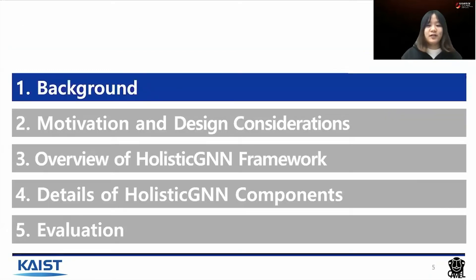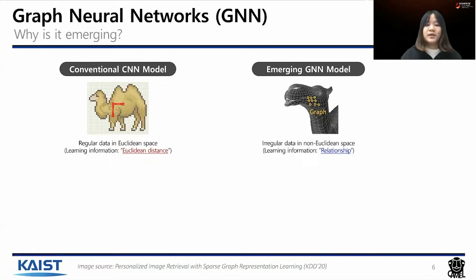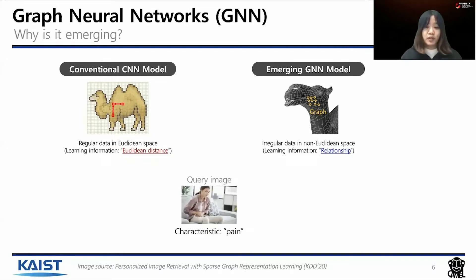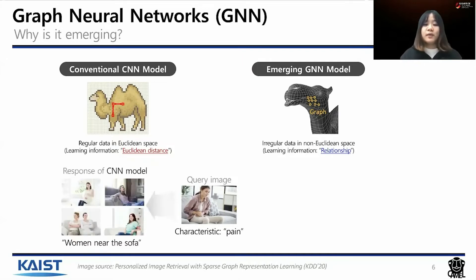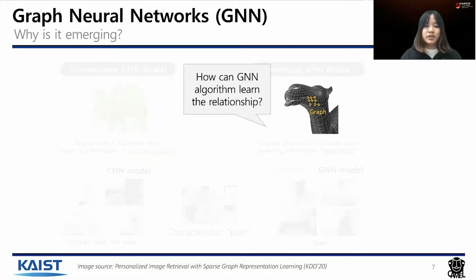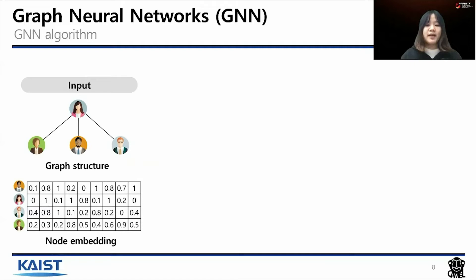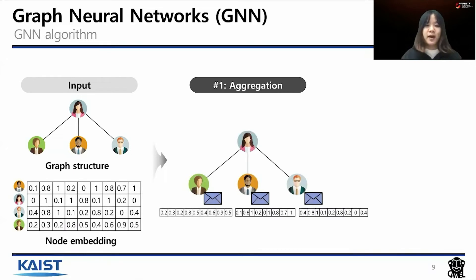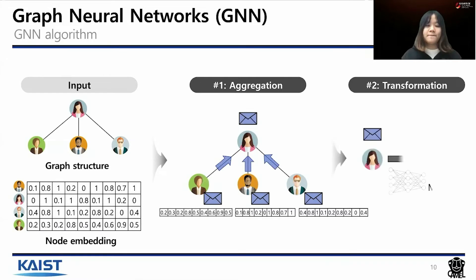Let's go over how GNN works. GNN can achieve higher accuracy than conventional CNN models since CNN can only learn distance information, while GNN can learn the relationship between lots of data. For example, if you use an image with a characteristic of pain, CNN responds with a woman near the sofa while GNN can learn the response of pain. GNN requires two input data: graph structure and node embedding. Node embedding includes features of each vertex in the graph structure. GNN learns relationships by aggregating neighbor node embeddings and transforming the aggregated embedding to abstracted information with an MLP model.